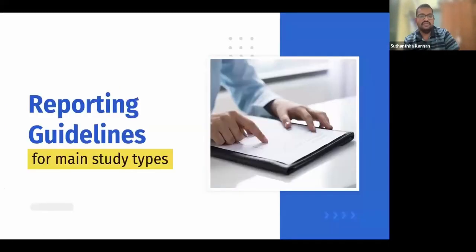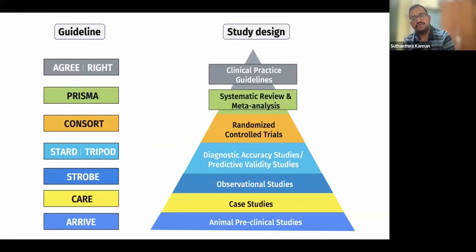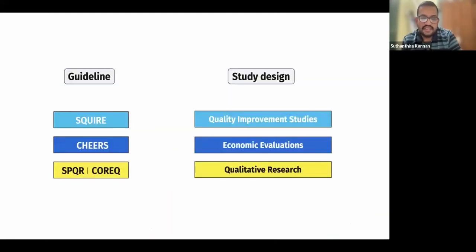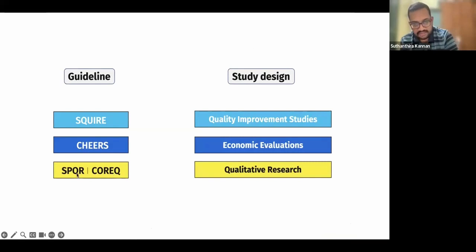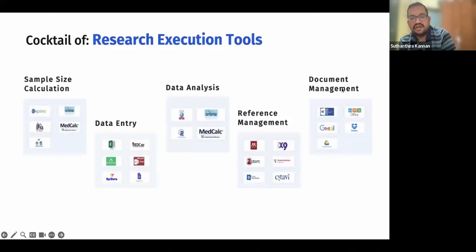First, use the flowchart to determine your study design, then download the corresponding guidelines and write your methodology. For qualitative research, there is COREQ and SQUIRE. For economic evaluation, there is something called the CHEERS protocol. For quality improvement, there are SQUIRE guidelines. These are all available on the internet to download.